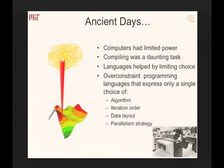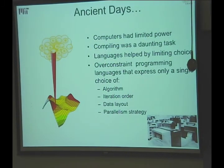Early languages told the compiler exactly what the machine had to do — one algorithm, one iteration order, one data layout, one parallelism strategy. You found the best approach in your head and mapped it directly. As computers became more powerful, compilers could explore around that space — better register allocation, better memory layout — finding improved paths within the given program space.